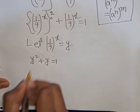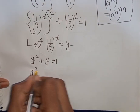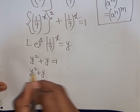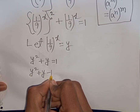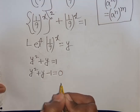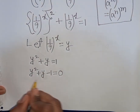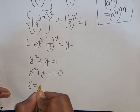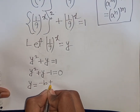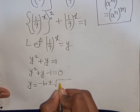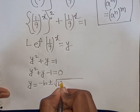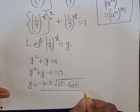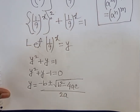Now we can write y squared plus y minus 1 equals 0, taking the 1 to the left side. Now I can apply the quadratic formula: y equals negative b plus or minus square root of b squared minus 4ac, divided by 2a.